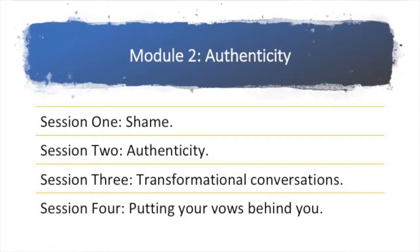It's about replacing a negative vow with a positive vow — changing the old to the new. That's Module 1 and its four content sessions. In Module 2, we're calling it Authenticity. The first session is on shame, the second is on authenticity just like what we have currently, the third is Transformational Conversations, and the fourth is Putting Your Vows Behind You. All four of those content pieces are from our current content in either 101 or 201.